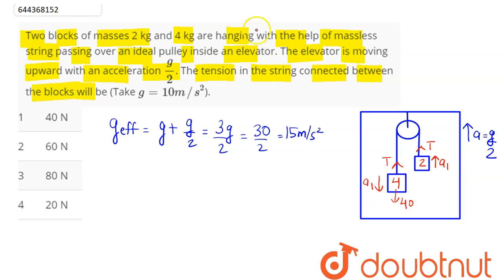Next we can say the tensions in these are T and T. So here we can see this is 40, as well as we have this pseudo force on this object as g by 2 comes as 5, so here 4 into 5 comes as 20.